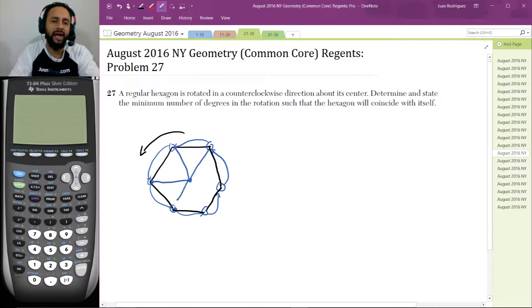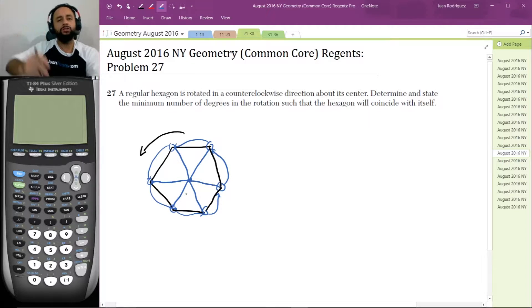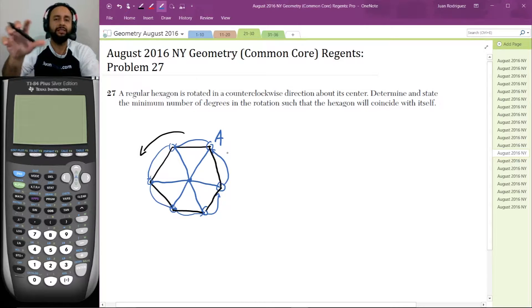We know that the number of times, because it can be divided into six congruent parts, we know the number of times you can rotate so that let's say vertex A comes back all the way around to itself is six times. So as a result, we can actually rotate it six separate times to get back to point A.